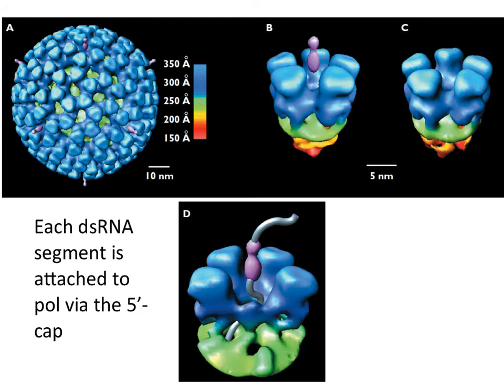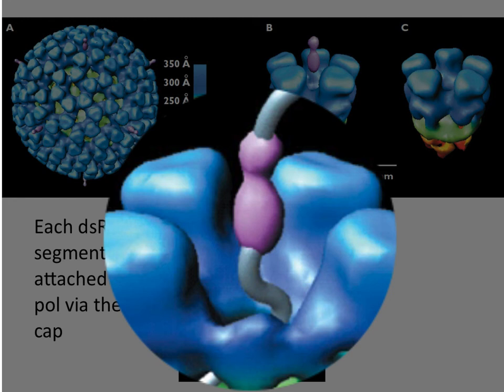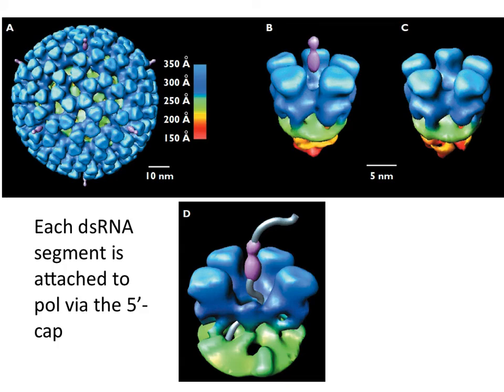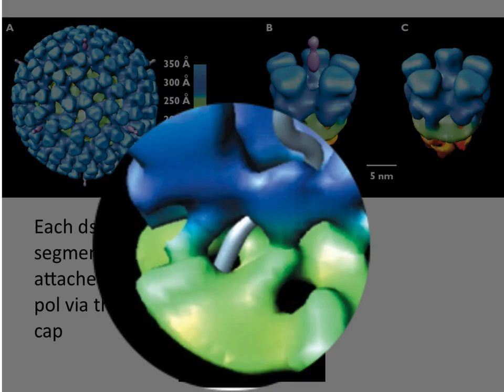This is a cryo-EM structure of rotavirus particles in the act of making mRNA. You can see here on the bottom this is one five-fold axis of symmetry, and you can see an mRNA coming out of the particle. The idea is that below each five-fold axis of symmetry there is one segment and one enzyme. So each segment is located right below the five-fold axis, and after the virus gets out of the endosome, that enzyme produces mRNA that is extruded from the particle. It's a really neat method.